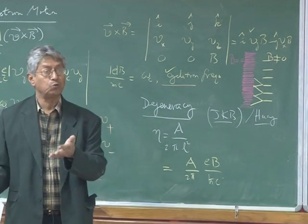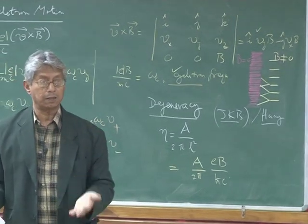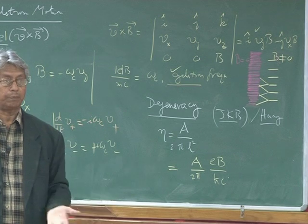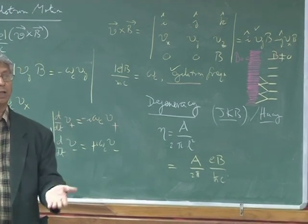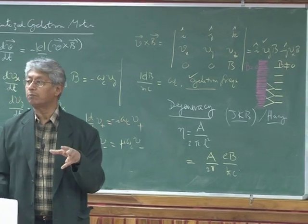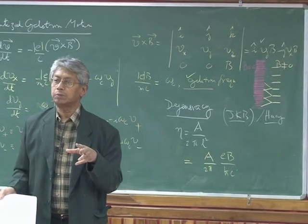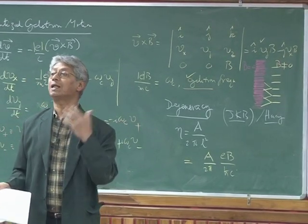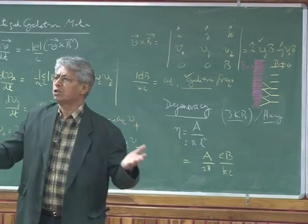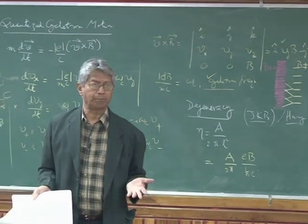So that's an experimental tool in the hands of experimentalists, that by changing the value of the B field, given a given sample, changing the value of B field, you can actually change the degeneracy. What is the physical meaning of that? Degeneracy means, suppose I have capital N number of electrons.